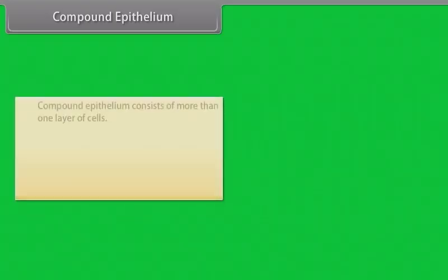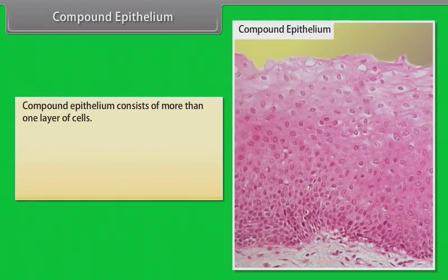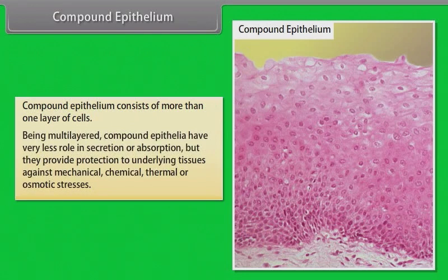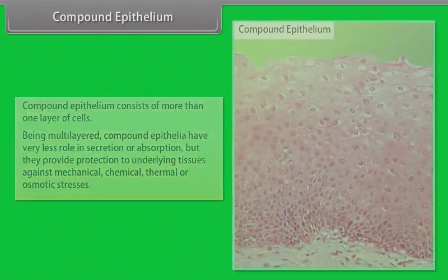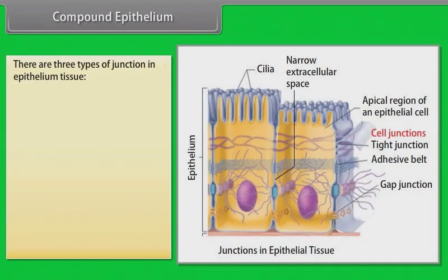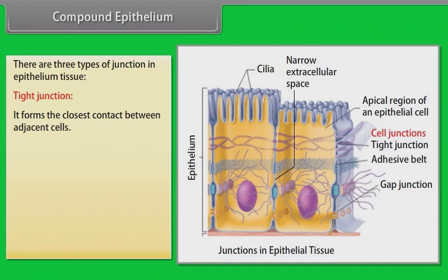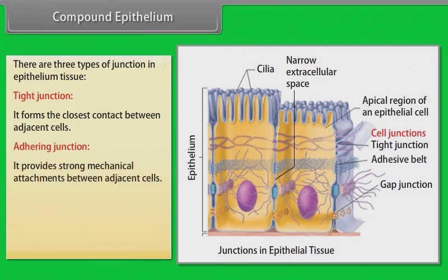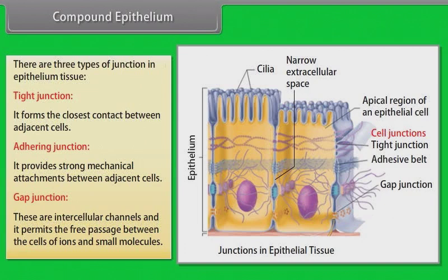Compound epithelium consists of more than one layer of cells. Being multilayered, compound epithelia have very little role in secretion or absorption, but they provide protection to underlying tissues against mechanical, chemical, thermal, or osmotic stresses. There are three types of junctions in epithelial tissue: tight junction, which forms the closest contact between adjacent cells; adhering junction, which provides strong mechanical attachments between adjacent cells; and gap junction, which are intercellular channels that permit the free passage of ions and small molecules between cells.